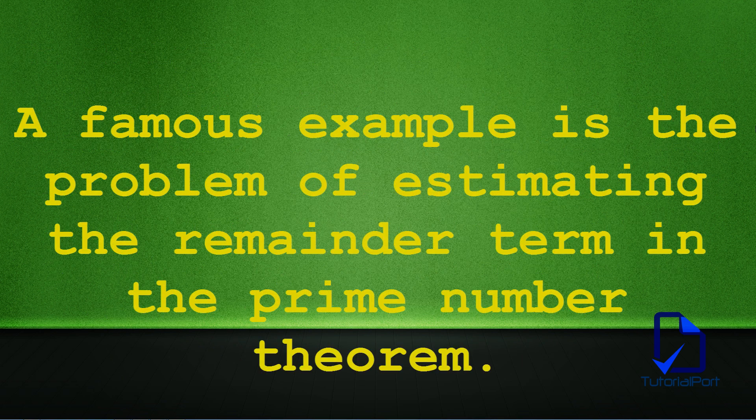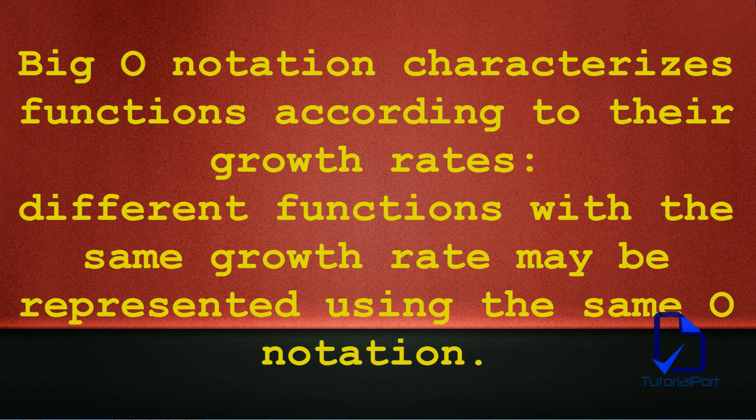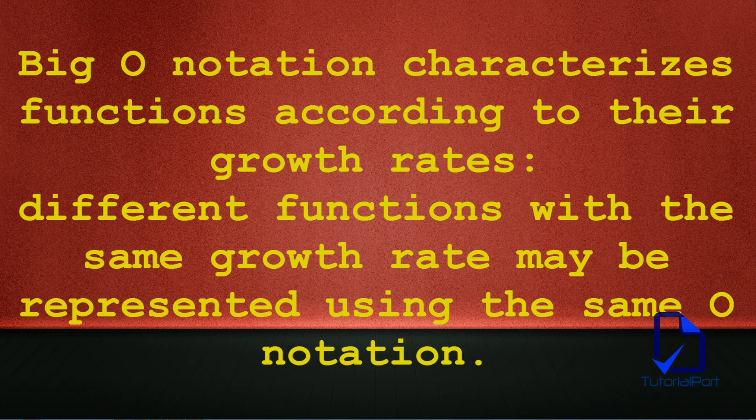A famous example is the problem of estimating the remainder term in the prime number theorem. Big O notation characterizes functions according to their growth rates.